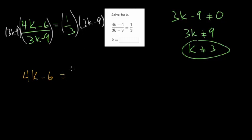And on the other side, we get this 3k minus 9 times 1 third. Well, if we put it over 1, we're just multiplying fractions, and so you get 3k minus 9 up top and 3 in the denominator.